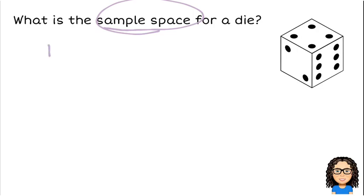Sample space is a list of all the outcomes. So when I roll a dice, I could get a 1, 2, 3, 4, 5, or 6. And that is my sample space.